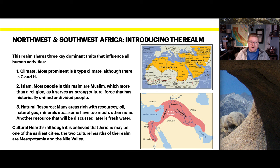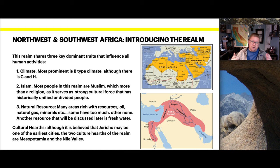Going back to climate, the most prominent climate type is B, although there are variations of C and H. Islam — most people in the realm are Muslim, which is more than just a religion. It serves as a strong cultural force that has historically either unified or divided its people.